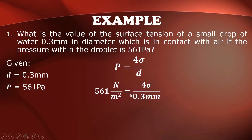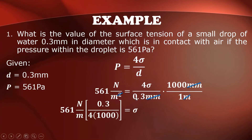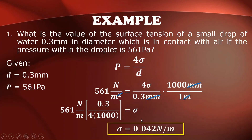561 newtons per meter squared equals 4 times the surface tension divided by 0.3 millimeters. Since meters and millimeters don't match, convert millimeters to meters: 0.3 mm divided by 1000 mm per meter. Cancelling units and cross-multiplying: 561 times 0.3 divided by 4 equals 2.042 newtons per meter.